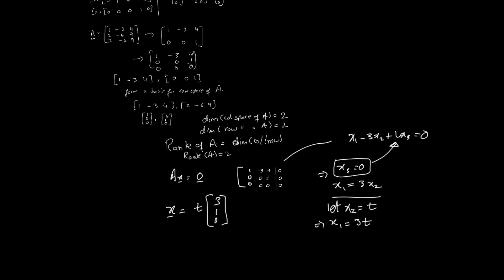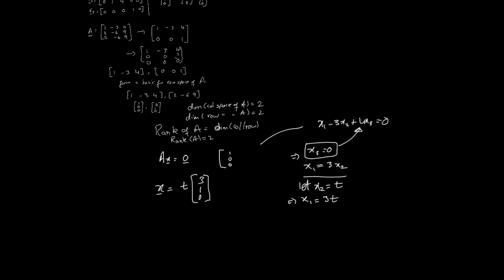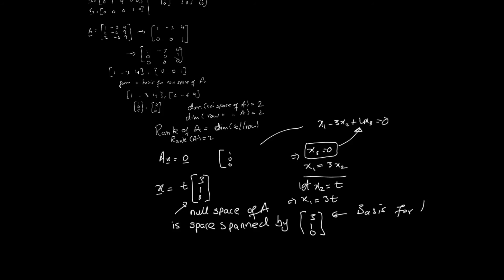These are the infinity of solutions — this is the null space. So the null space of A is the space spanned by the vector (3, 1, 0). This vector spans the null space of A. Since a single non-zero vector is always linearly independent, this vector spans the null space and is linearly independent, which means it is also a basis for the null space of A.